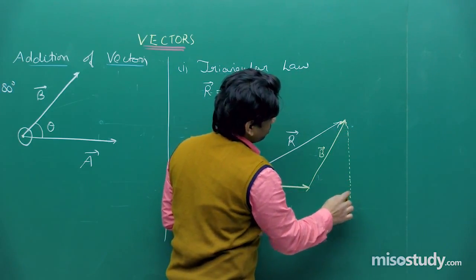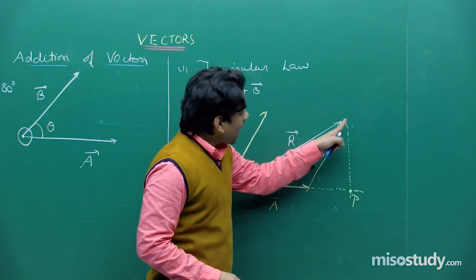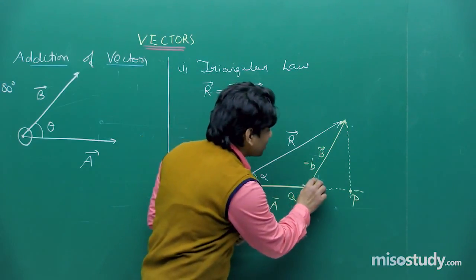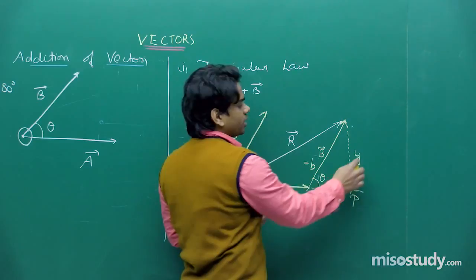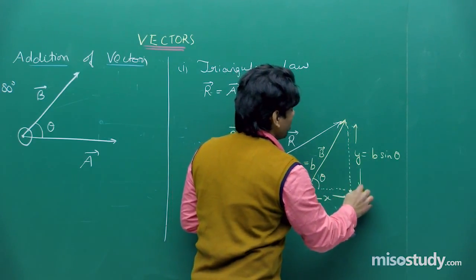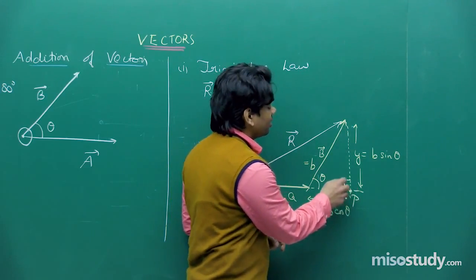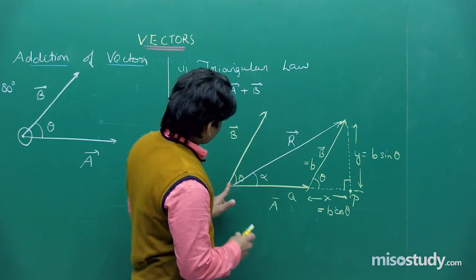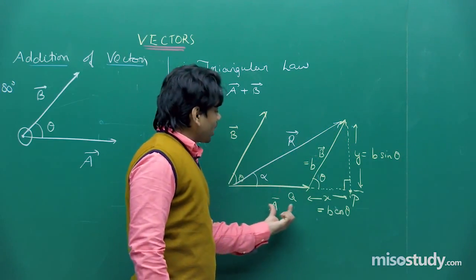To find the magnitude of the resultant R, draw a perpendicular from the head of vector B to the extension of vector A, meeting at point P. If the magnitude of A is 'a' and the magnitude of B is 'b', then the perpendicular has length b·sin θ and the base extension has length b·cos θ, using simple trigonometry since the angle is 90 degrees.